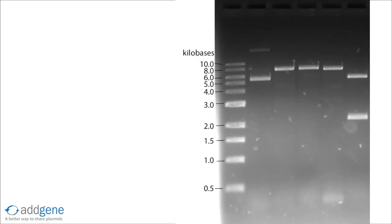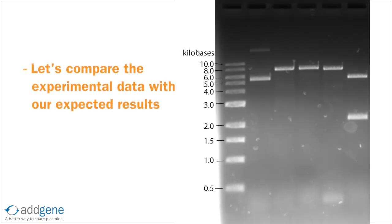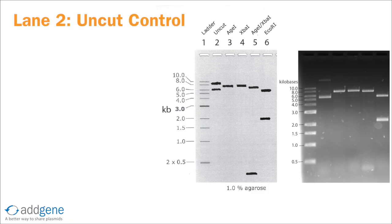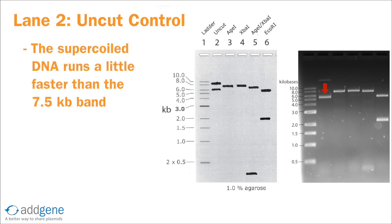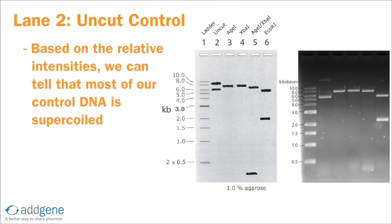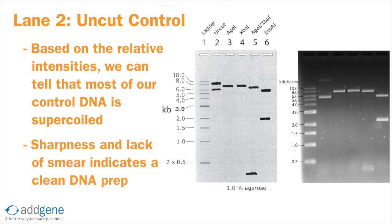Now that we've run our digestion, let's go through each lane and compare our experimental data with our expected results. We've marked the ladder with the sizes of the markers. Lane 2 is the uncut negative control. We expect to see a supercoiled band and a nicked band, and that's what we see here. As expected, the supercoiled runs a little faster than the 7.5 kb band, and the nicked runs a little slower. Based on the relative intensities of these two bands, we can tell that the majority of our DNA is in the supercoiled conformation. Also, based on the sharpness of the bands and the lack of smear, we can deduce that we have a clean DNA prep.